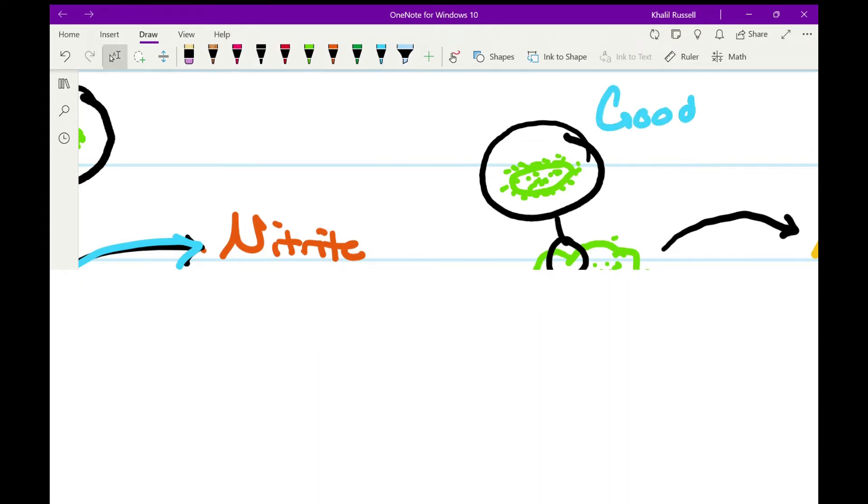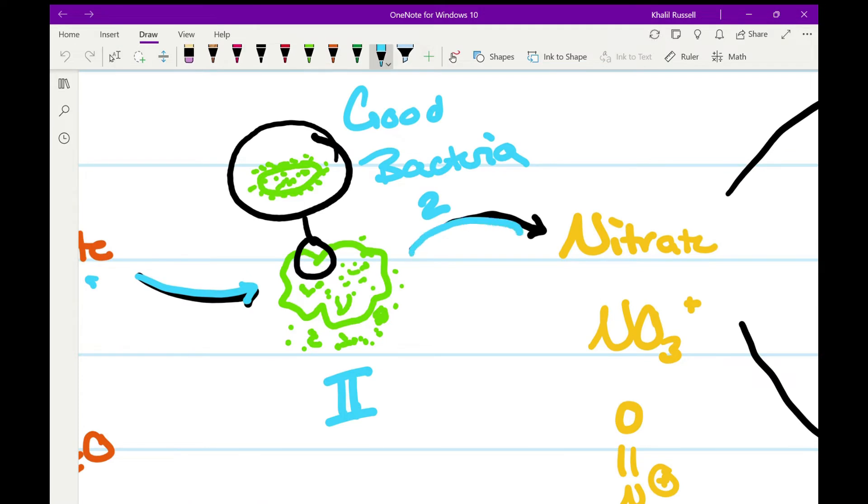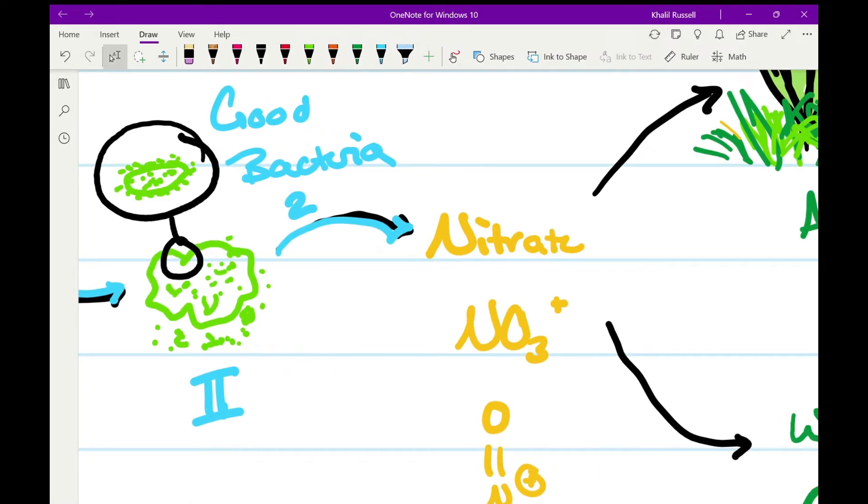So then you go through good bacteria two. And what this does is a separate bacteria species. It turns your nitrite into nitrate.